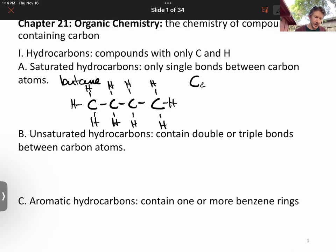If you count up your carbons, of course, we have four. If you count up your hydrogens, we'll find that there are 10. C4H10 is the formula for butane.